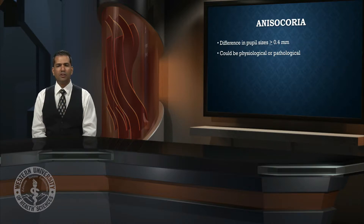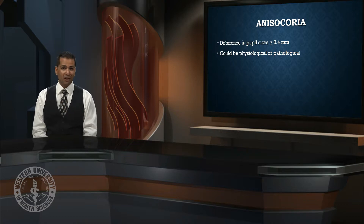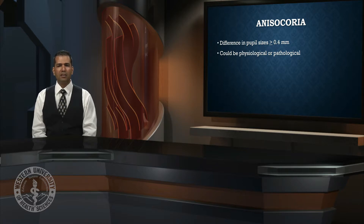Anisocoria is conventionally defined as a difference in pupil size between eyes greater than or equal to 0.4 millimeter. This could be physiologic, meaning normal healthy variation, or it could be pathological. If one suspects disease, advanced testing is needed.